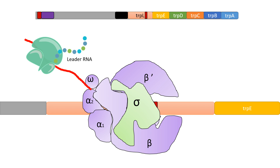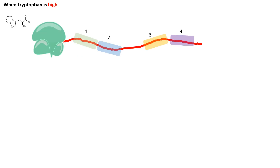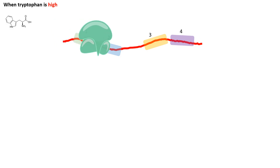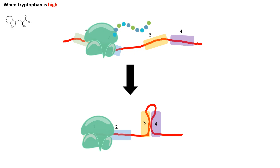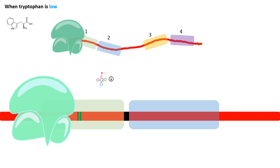Zooming into the molecular details: the leader RNA is translated simultaneously with transcription, since in bacteria transcription and translation occur at the same time. When tryptophan levels are high, the ribosome moves quickly because all amino acids needed for protein synthesis are abundant. As a result, regions 2, 3, and 4 can pair together, forming the attenuator stem loop.